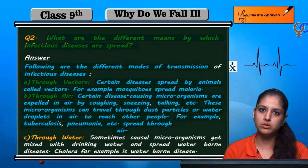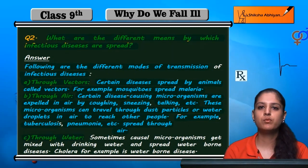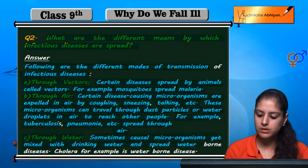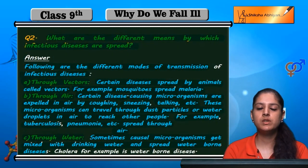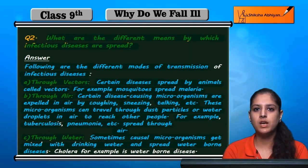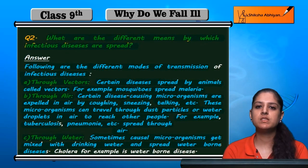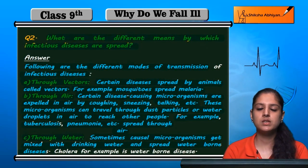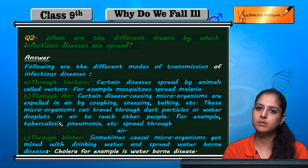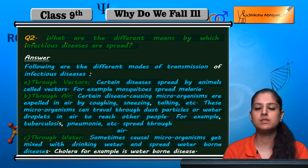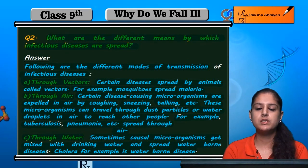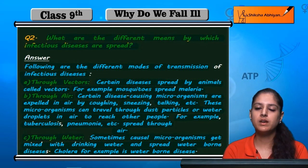The third mode is through water. Water can also spread diseases. Sometimes disease-causing microorganisms get mixed with drinking water and spread waterborne diseases. If the water is contaminated with microorganisms and a healthy person drinks that water, they can contract a waterborne disease. For example, cholera is a waterborne disease. So infectious diseases can spread through vectors, through air, and through water.